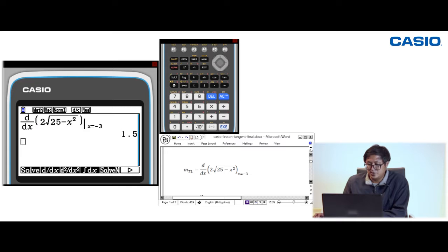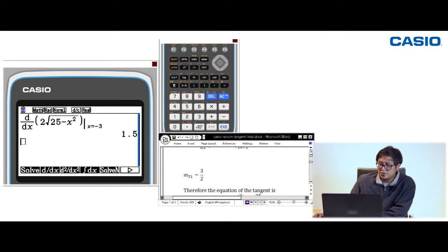What does this mean? It means that the slope of the function at the point (-3, 8) is 1.5 or 3/2. Now we know the slope is 1.5 or 3/2. Therefore, the equation of the tangent is y = (3/2)x + 25/2.